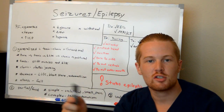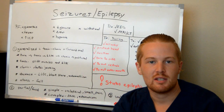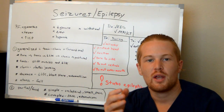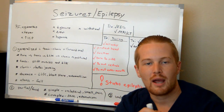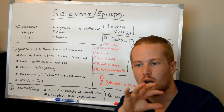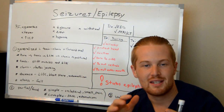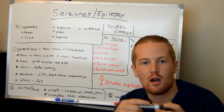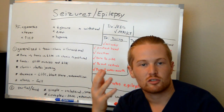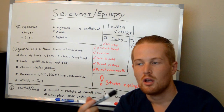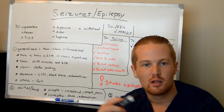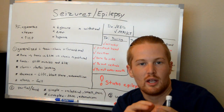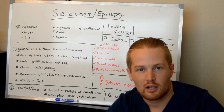Today we're going to talk about seizures, epilepsy, and status epilepticus. Seizures are when you have an abnormality in the brain causing the electrical signals to be sent incorrectly, and it causes problems with the muscles, loss of consciousness, dysthesia, and biting one's tongue. It causes an abnormal signal and the body responds incorrectly.